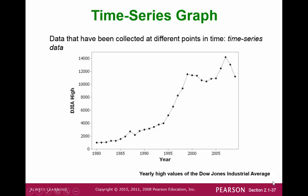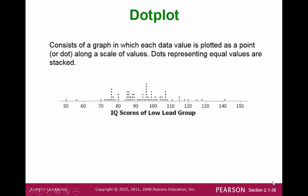A time series graph is essentially a scatterplot where the x-value, or the horizontal axis, would be time. A dot plot is a plot of dots that represent each data value.